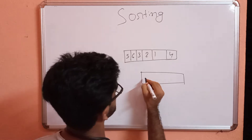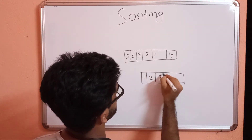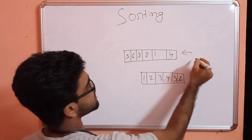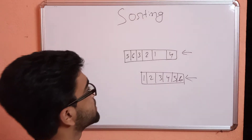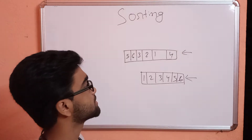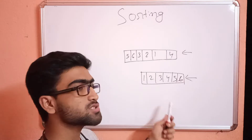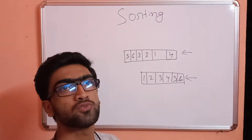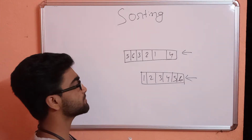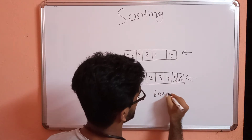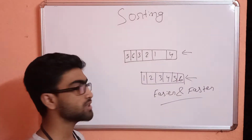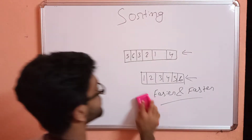If I sort a list in ascending order, this is the unsorted list and this is the sorted list. In which list will it be easier to find an element? It will be easier and faster to find an element in the sorted list, because you know which element is smaller and which is bigger. That's why sorting is important.